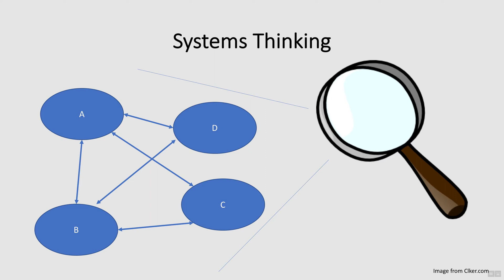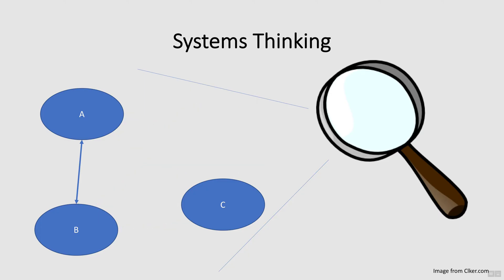The challenge with systems thinking is that the human brain can only consider a limited number of variables at one time. As well, it's difficult to imagine all the changes that can occur in different parts of the system as a result of intervening on a particular part. That's why systems researchers have designed methodological tools that create visuals or maps of the system, so that we can consider all the interacting system parts to make informed decisions about where to intervene.